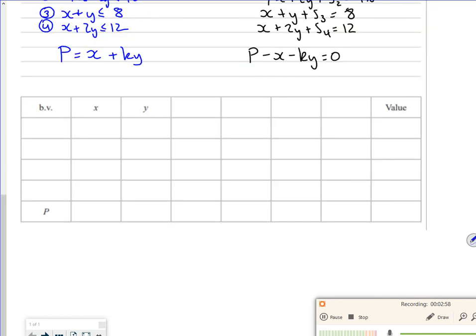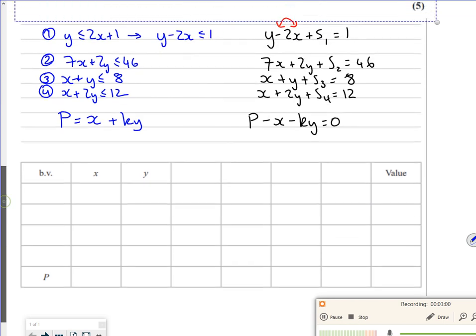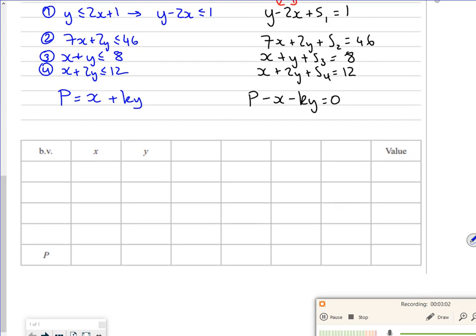So that first one, I've got minus 2x plus y plus 1 lot of s1, no lots of s2, no lots of s3, no lots of s4 is equal to 1. Remember the old papers, the old Decision 2 papers, the modular papers, didn't use s1, s2, s3, they used r, s, t and u. So just be careful there.